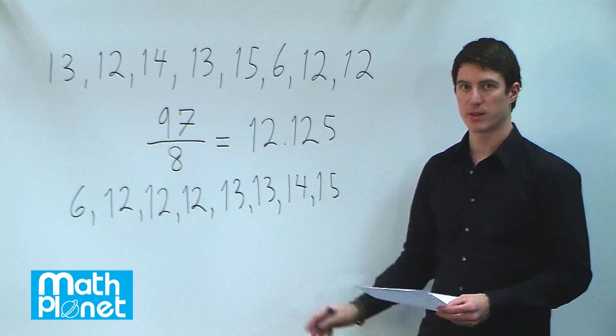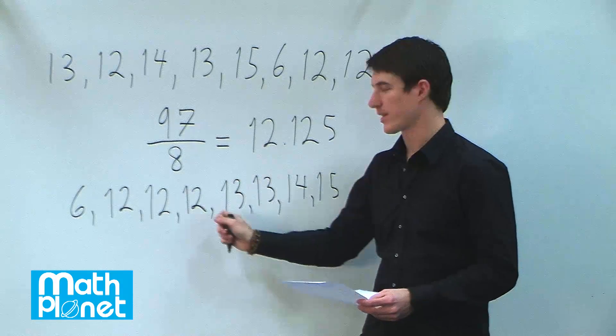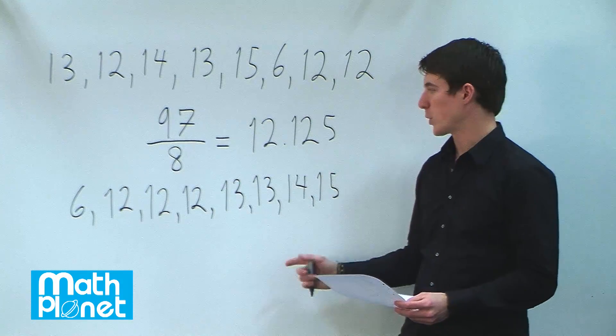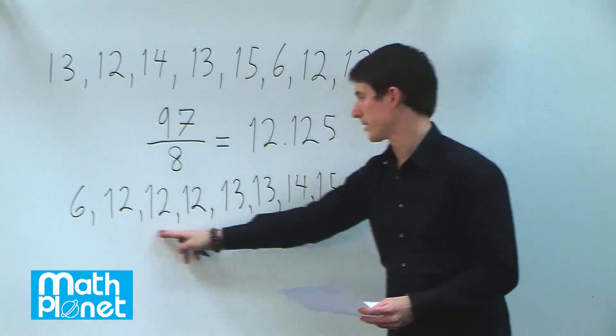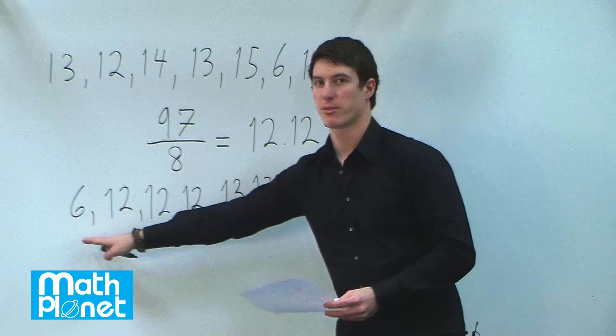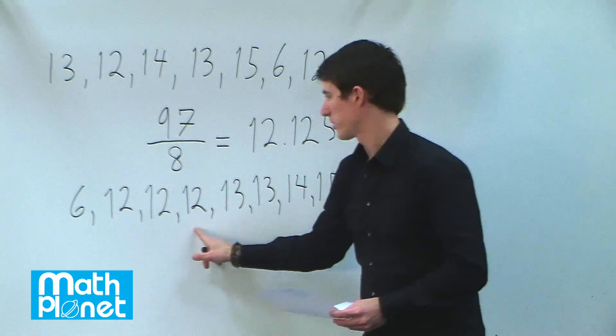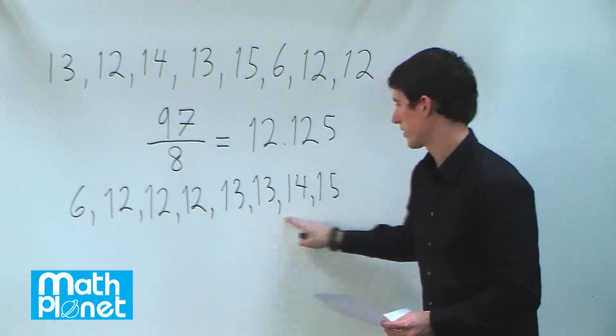So to find the median, we need to find out which number is in the exact middle. If there was an odd number, we would find the middle number. Since it's an even number—there are eight—we have to see what's between the four on this side and the four on this side.